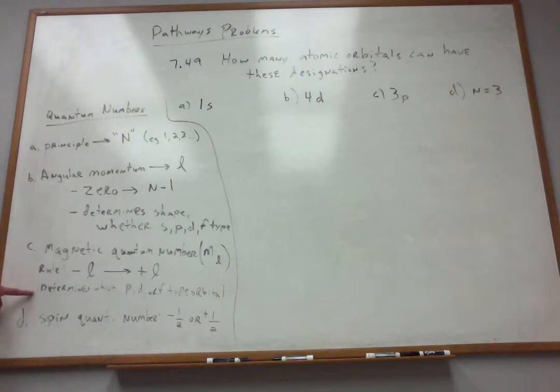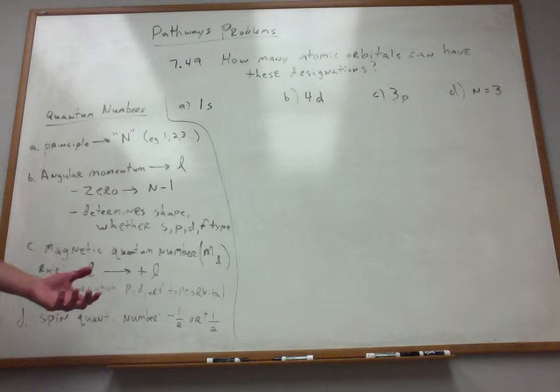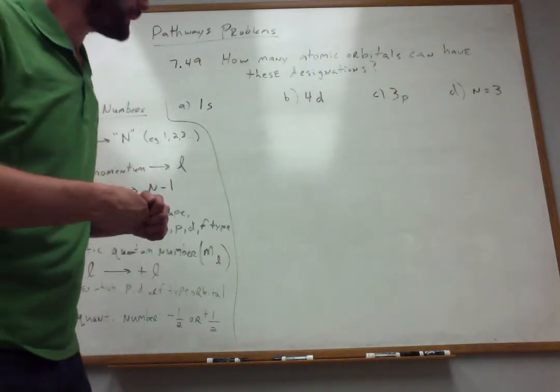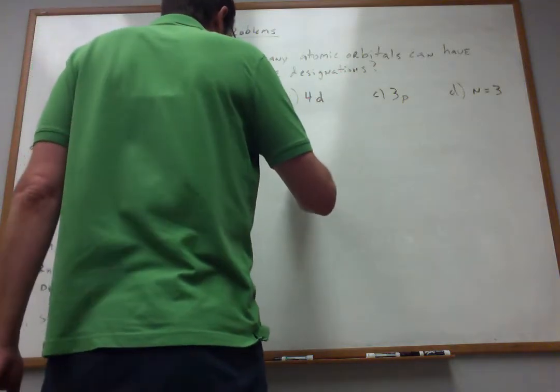This one determines which type of P, D, or F orbital that I'm dealing with. So remember, for the P atomic orbitals, the ones that were dumbbell-shaped, there were three of them.